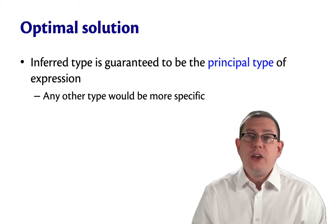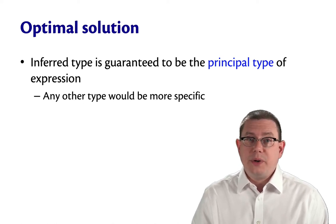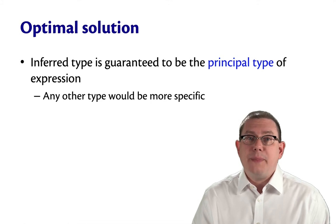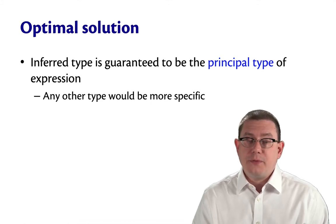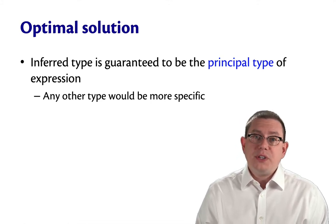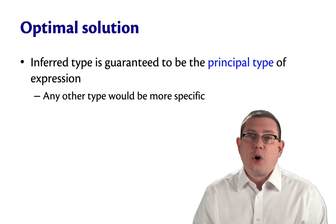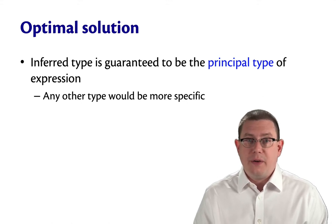Much like the unification algorithm gives an optimal answer in a way, so does this type inference algorithm, HMTypeIn. The inferred type here is guaranteed to be what's called the principal type of the expression.